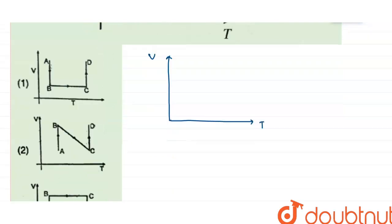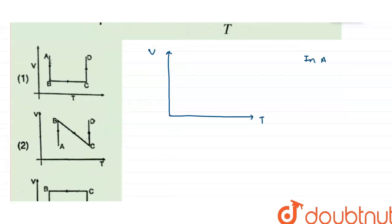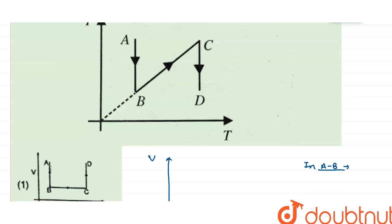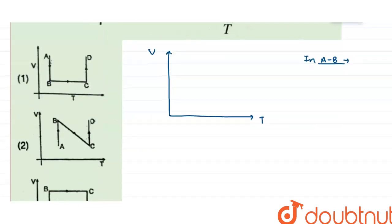There are three processes. First is A to B. As you can see in this diagram, in A to B, temperature is constant because the temperature at point A is the same as the temperature at point B. From the ideal gas equation PV = nRT, since n, R, and T are all constant, I can write that for A to B, PV equals constant.